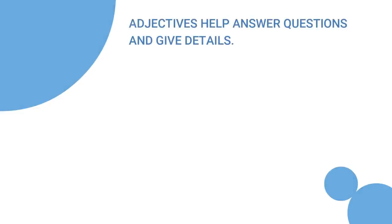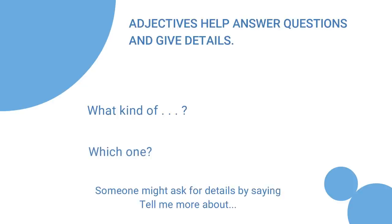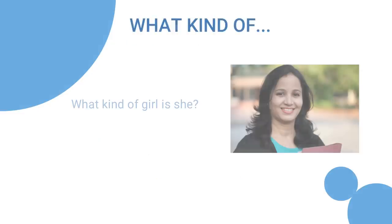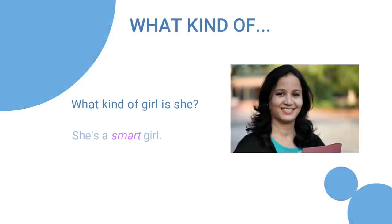Adjectives help answer questions and give details. Adjectives answer the questions 'what kind of' and 'which one.' Someone might ask for details by saying 'tell me more about,' 'what kind of?' What kind of girl is she? She's a smart girl.